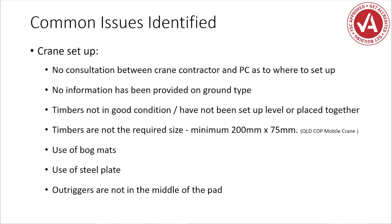For crane setup, some key things that sometimes don't happen well: consultation between the crane contractor and the principal contractor about where they're going to set up. Sometimes a crane will roll onto site and just set itself up somewhere, and when you ask the principal contractor or operator whether they were informed, the answer is sometimes no. That creates significant issues for both parties. Information provided on ground type — we might have a geotechnical engineer's report, but it's not for the actual soil area where cranes are setting up. We need to be quite specific, depending on the job, ensuring appropriate controls are in place for the scope of works.